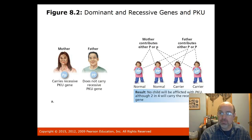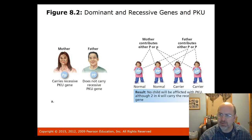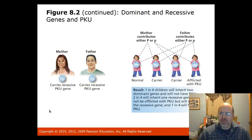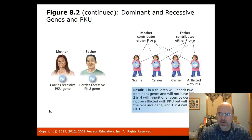This figure shows a variation of parents carrying one or two recessive genes and the result in their offspring. If only one parent carries a PKU gene, children might be carriers but won't have PKU themselves. However, if both parents are carriers of PKU, a child has a one-in-four possibility of having PKU.